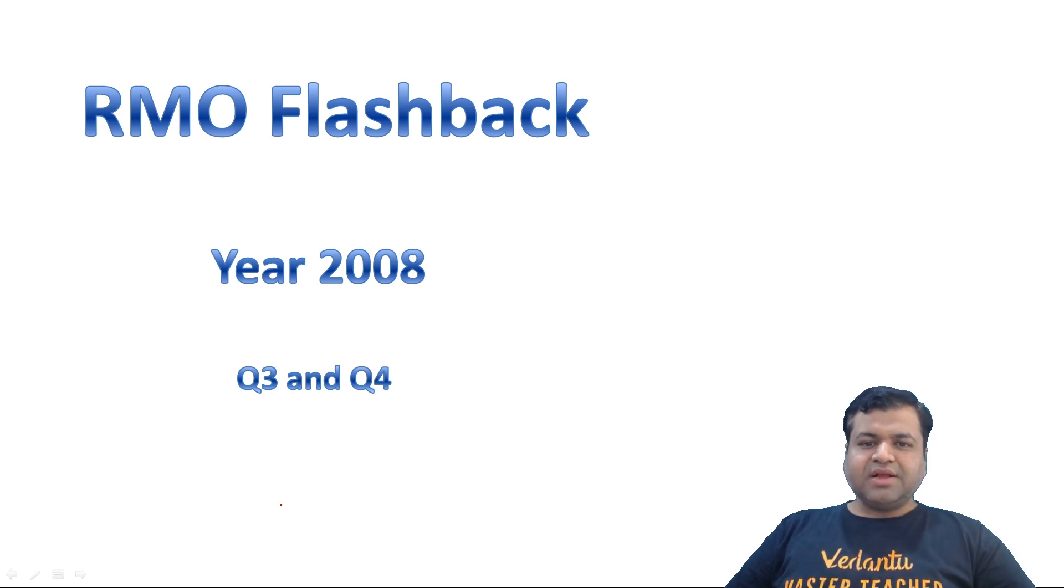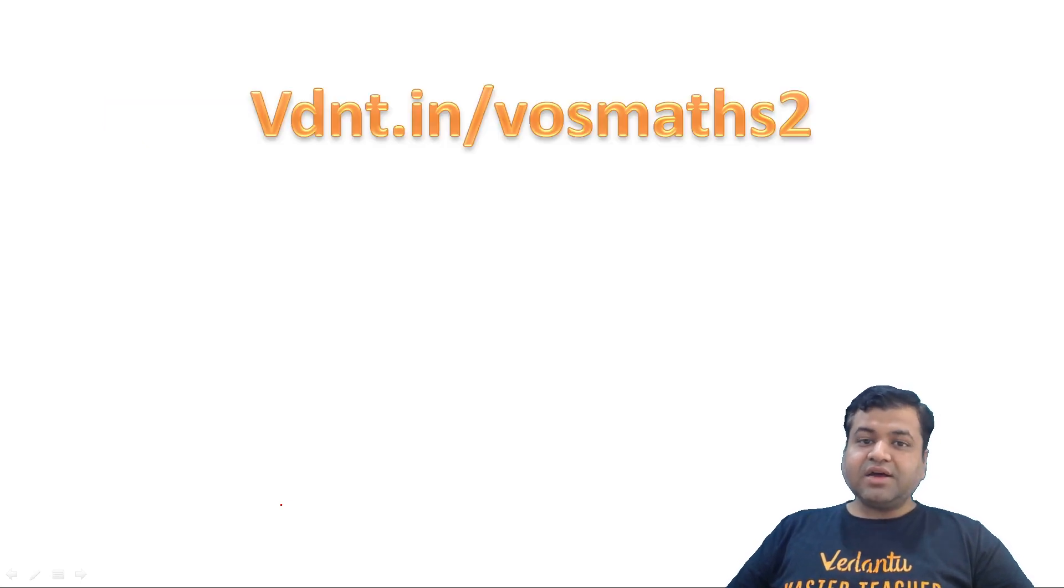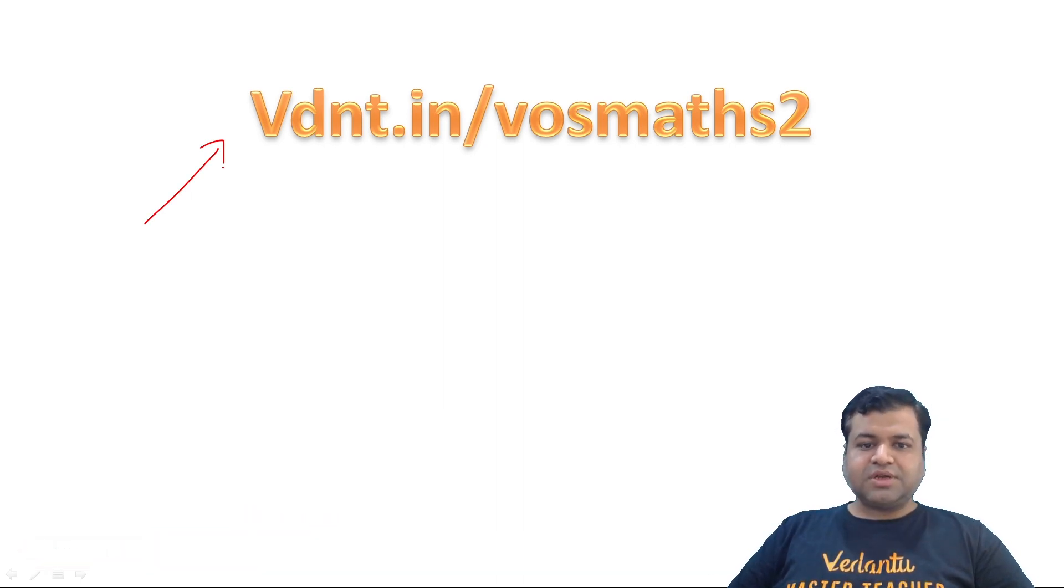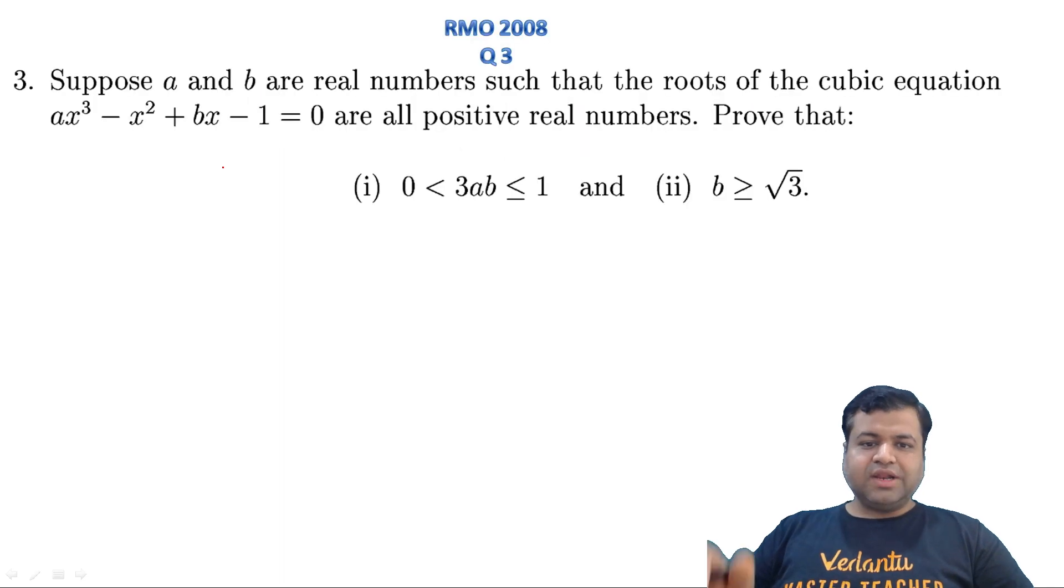One of these questions is from inequalities and the other one is from combinatorics. Both of the questions are easy. Before starting the session, if you want to prepare for any Olympiad exam, whether Math, Physics, Chemistry, Astronomy, Junior Science Olympiad, KVPY, NTSE or even JEE, kindly fill up this google form vdnt.in/vosmass2. Our concerned person will call you and help you get enrolled in these batches. All batches are completely free of cost.